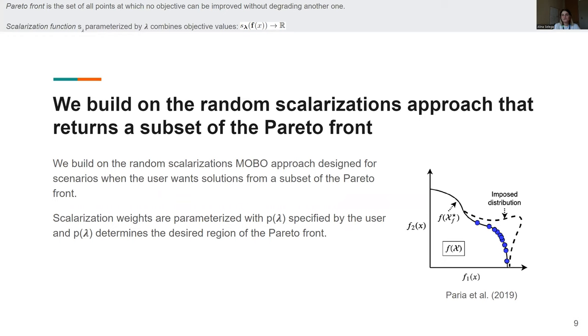So on the right we have a cartoon with two objectives and the solid black line shows the Pareto front and the dashed line shows the imposed distribution that this prior p of lambda ends up imposing on the Pareto optimal solutions.